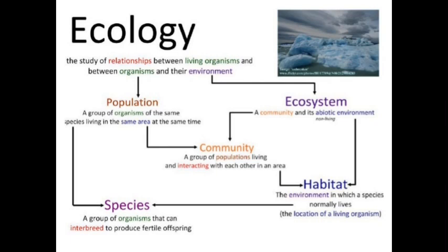The organism consists of a population. A group of organisms of the same species living in the same area at the same time is called a population. The species is a group of organisms that can interbreed to produce fertile offspring. The environment consists of an ecosystem, and different types of ecosystems are found in the environment.